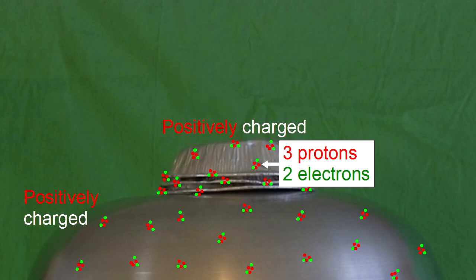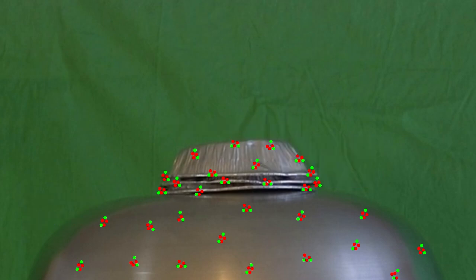Notice that just as with the hair, the plates are charged the same as the dome. Positive in this case. Only the top plate is free to move since it's on top and the edges of the top plate and the plate below it repel each other. Remember like charges repel.